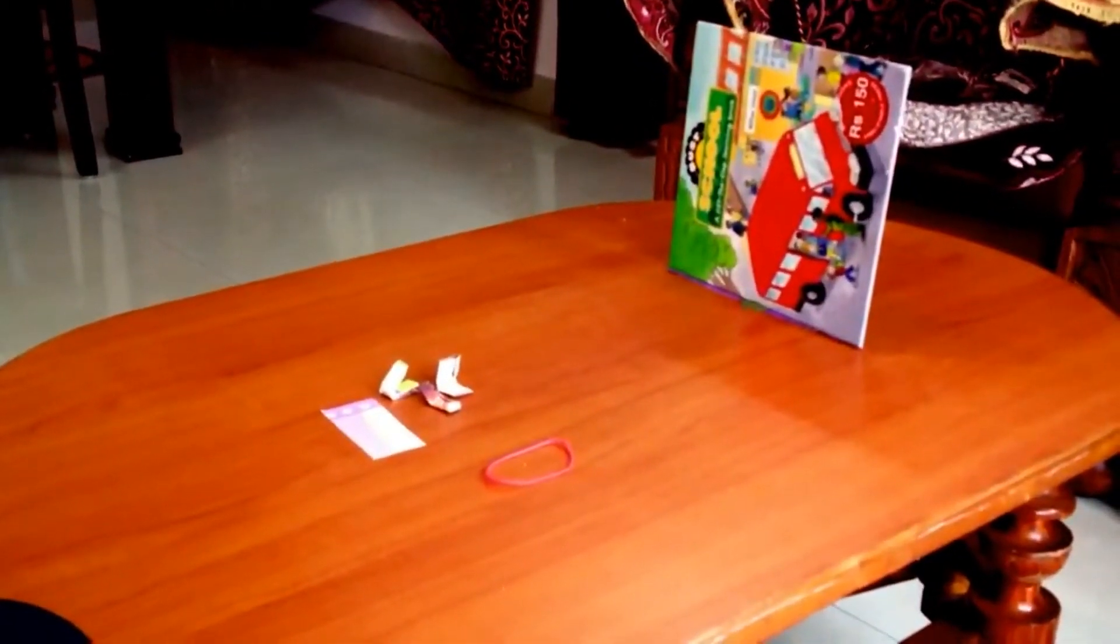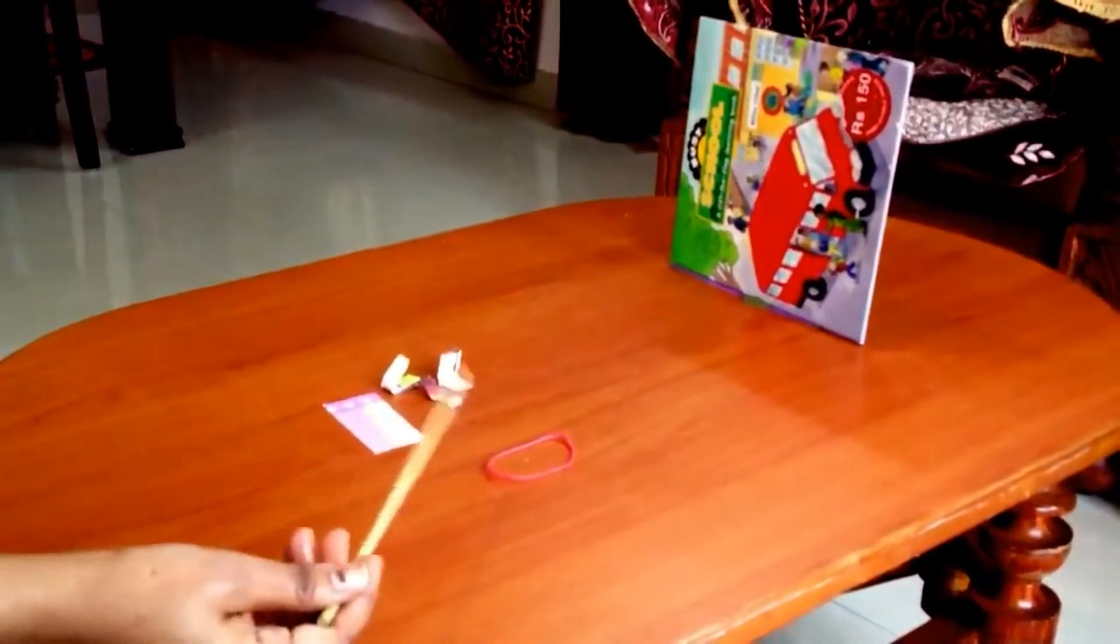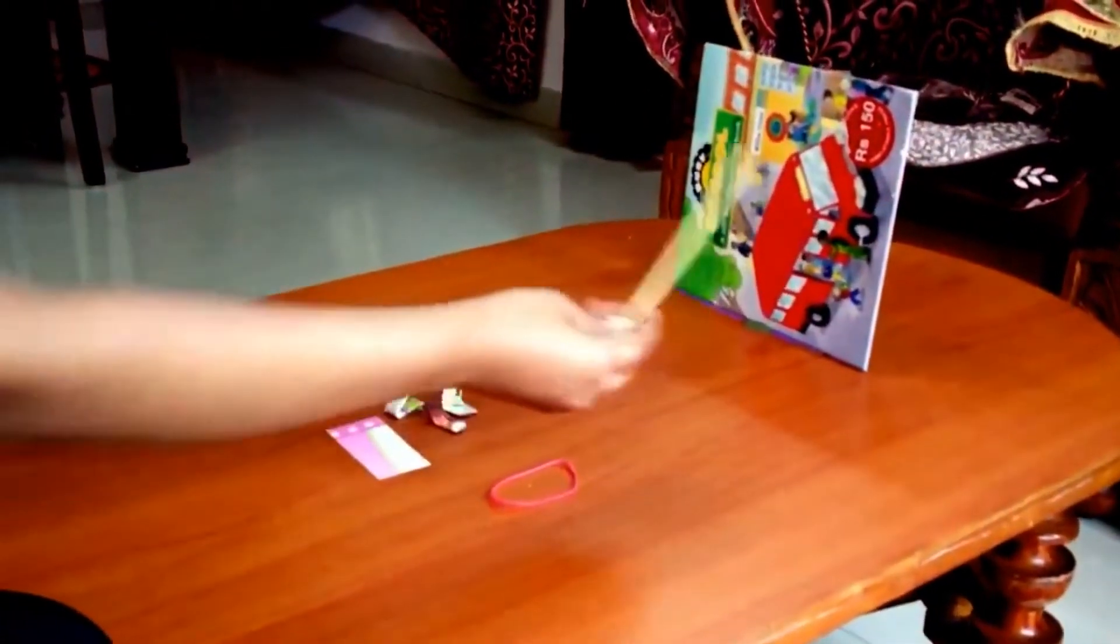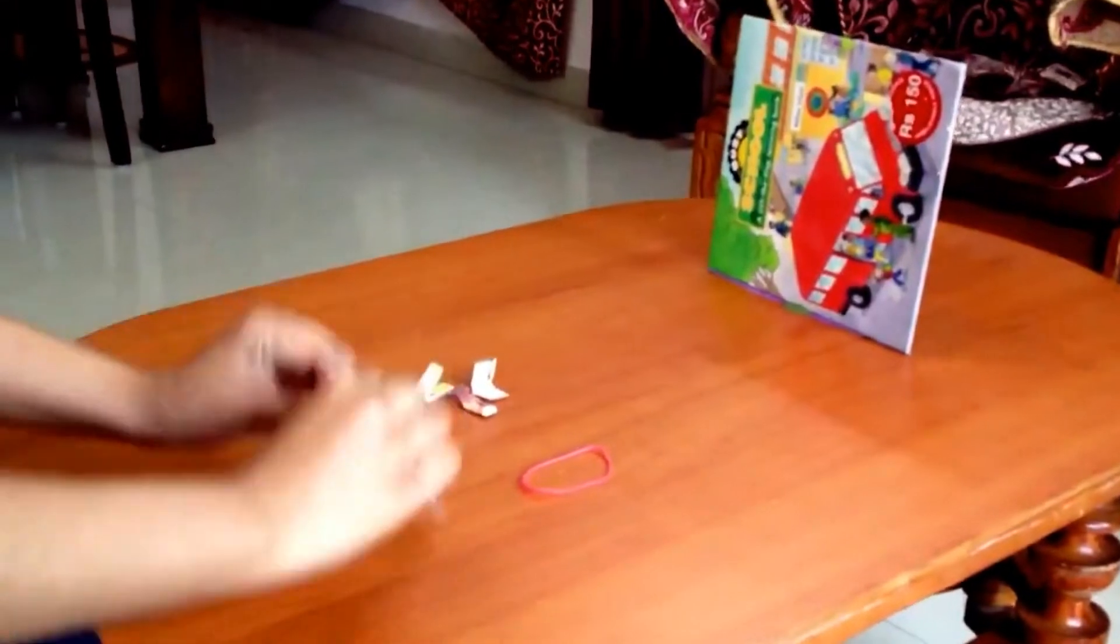For this activity we need a rubber band, piece of paper, and cardboard. Fold a paper like this to make a paper arrow.